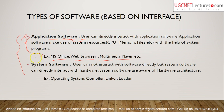One difference between application software and system software is that application software runs in the foreground — what you can see and interact with — while system software runs in the background. For example, when I write something on screen, the application software takes input, processes it through the operating system, and shows it on the output device. So right now I'm using both an input device and an output device.